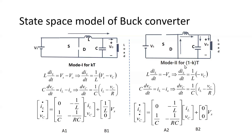In matrix form for mode 2: [iL-dot, vC-dot] equals [0, -1/L; 1/C, -1/RC] times [iL, vC] plus [0; 0] times Vs. The differential equation for vC during mode 2 has no input variable, so the input matrix B2 is [0; 0].